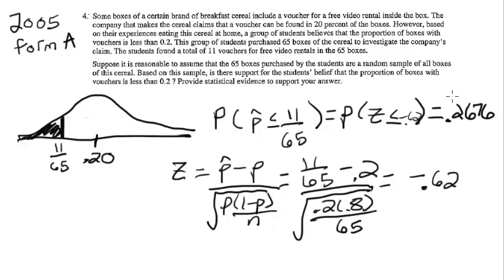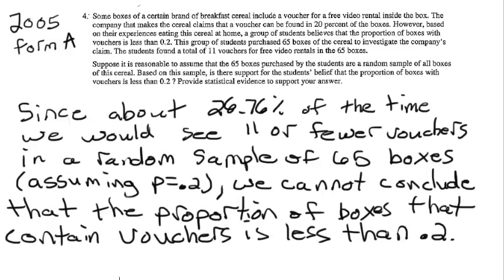So then we just want to recap that in a sentence. So here's my sentence, I said, since about 26.76% of the time we would see 11 or fewer vouchers in a random sample of 65 boxes, assuming that p equals 0.2. We cannot conclude that the proportion of boxes that contain vouchers is less than 0.2.